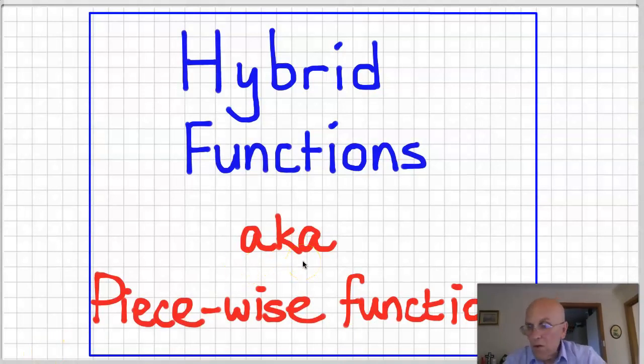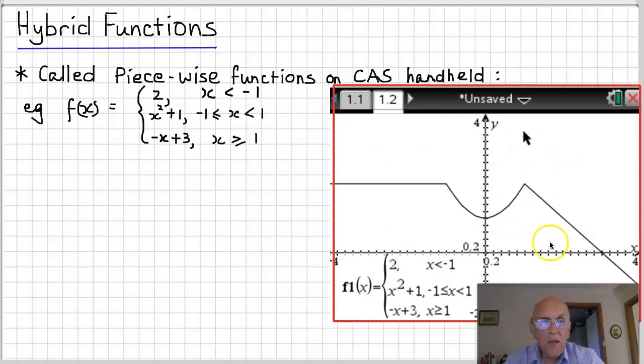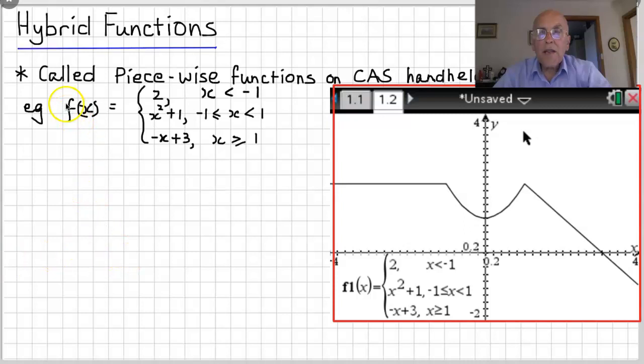Okay, hybrid or piecewise functions. These functions are called piecewise functions on the CAS handheld. For example, if we had f of x equal to 2 where x is less than minus 1, or x squared plus 1 when x is greater than or equal to minus 1 and at the same time less than plus 1, or x plus 3 where x is greater than or equal to 1. So this is what this function looks like. That's a continuous piecewise function.